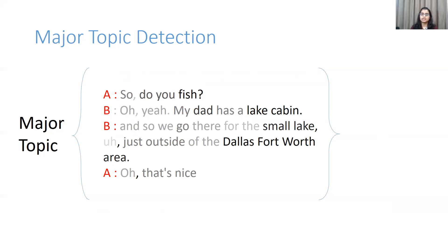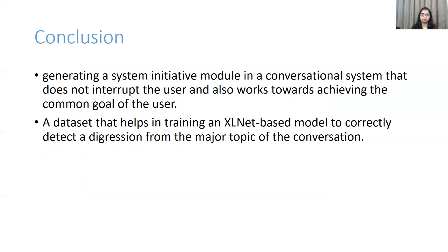Using this major topic, a templated system initiative — as seen in the conversation earlier — is generated to guide the user back to the original topic of conversation. In this paper, we looked at generating a system initiative module in a conversational system that does not interrupt the user and works towards achieving the common goal. We present a dataset that helps in training an XLNet-based model to correctly detect a digression from the major topic of conversation, and also present a case study where we detect topic shifts and generate a system initiative for the rectification of the same.